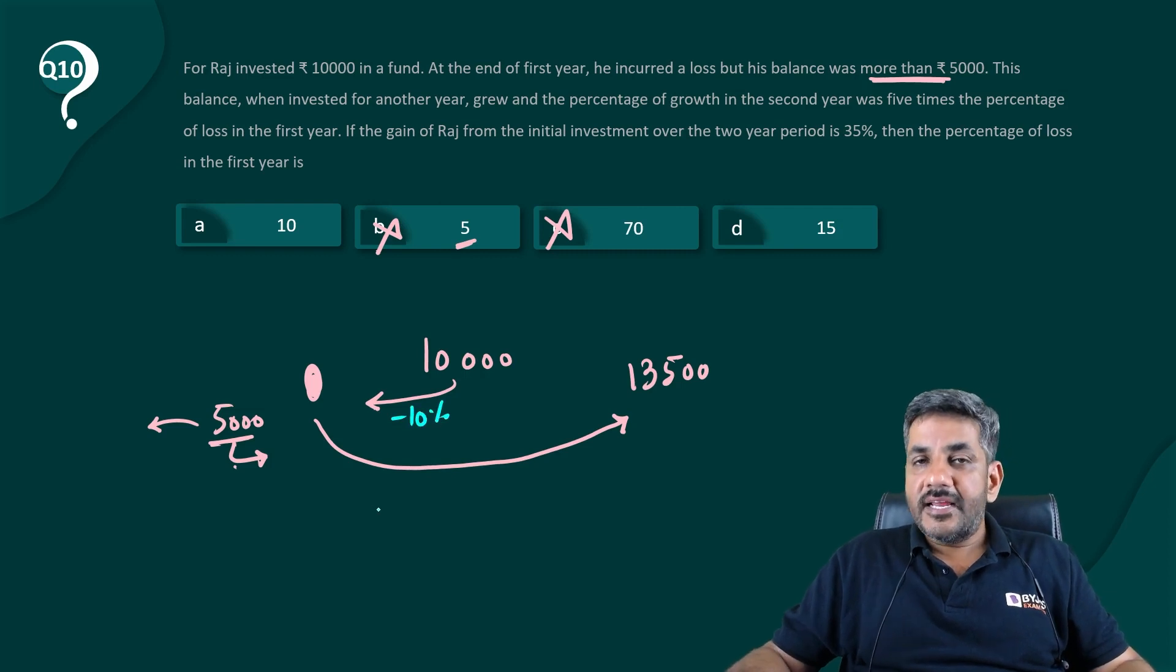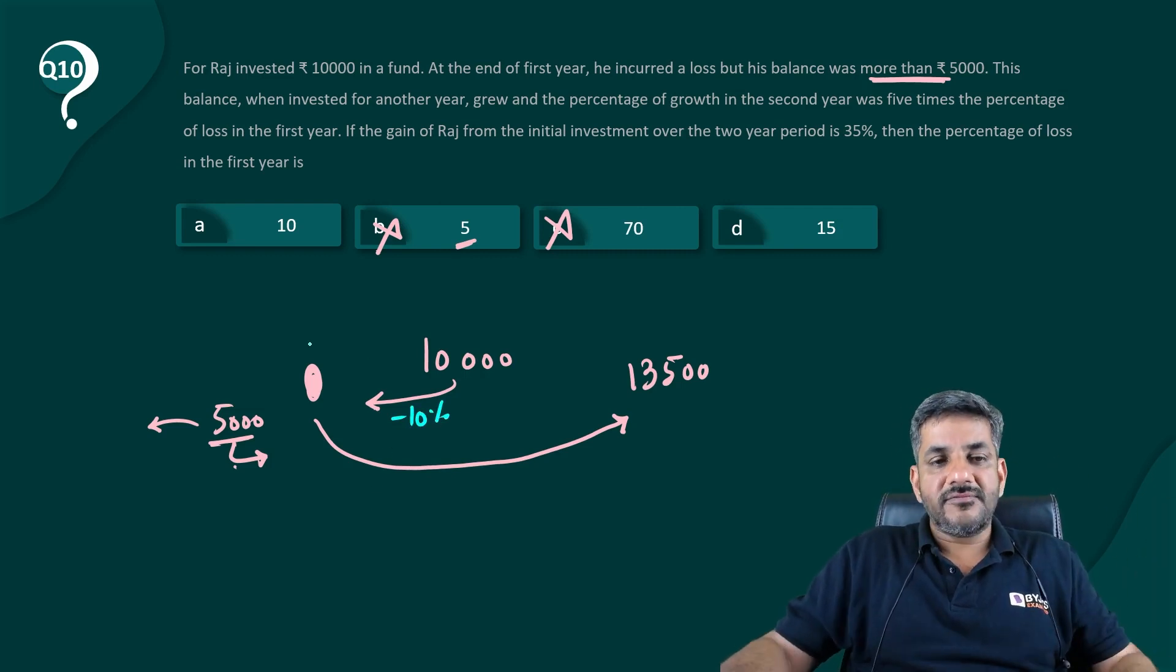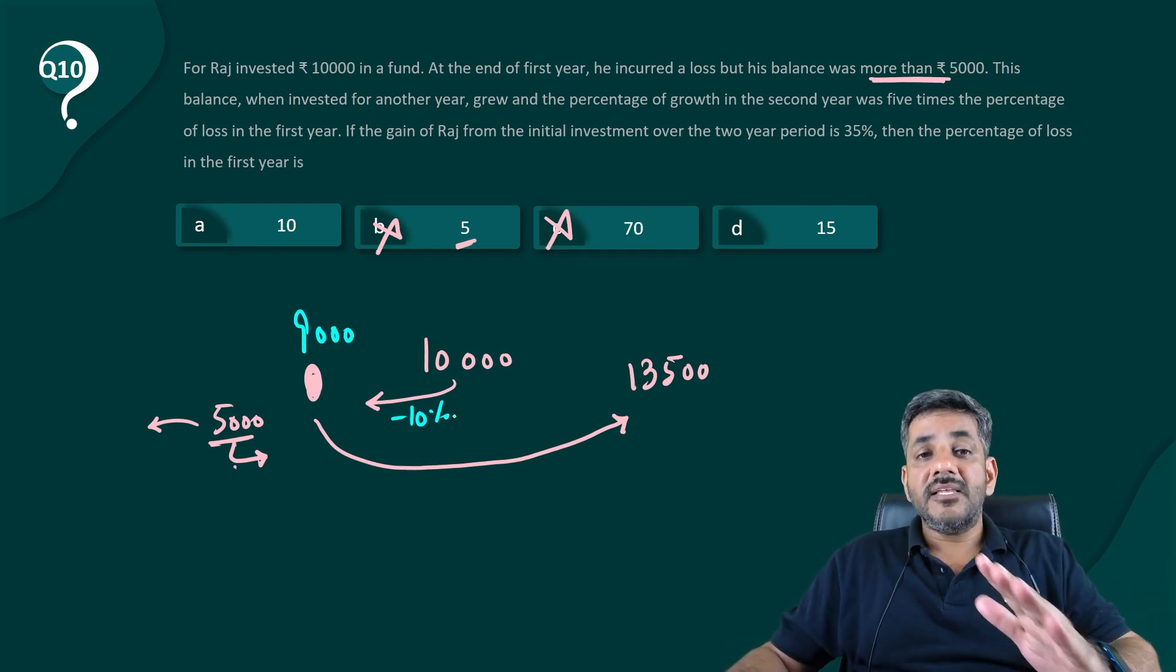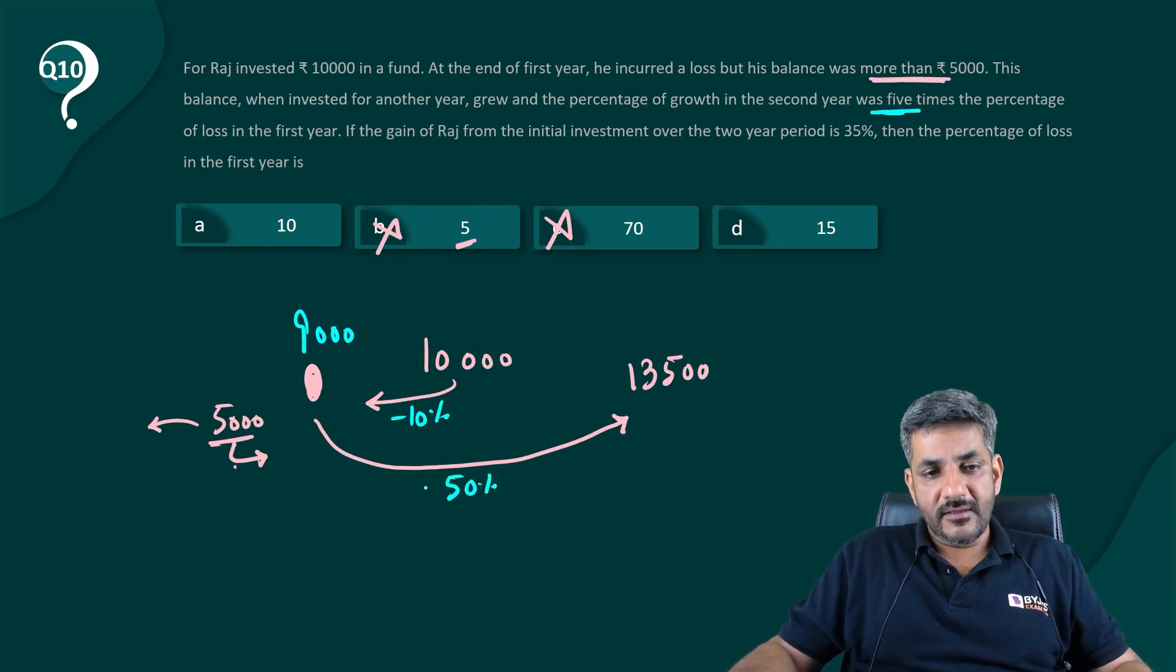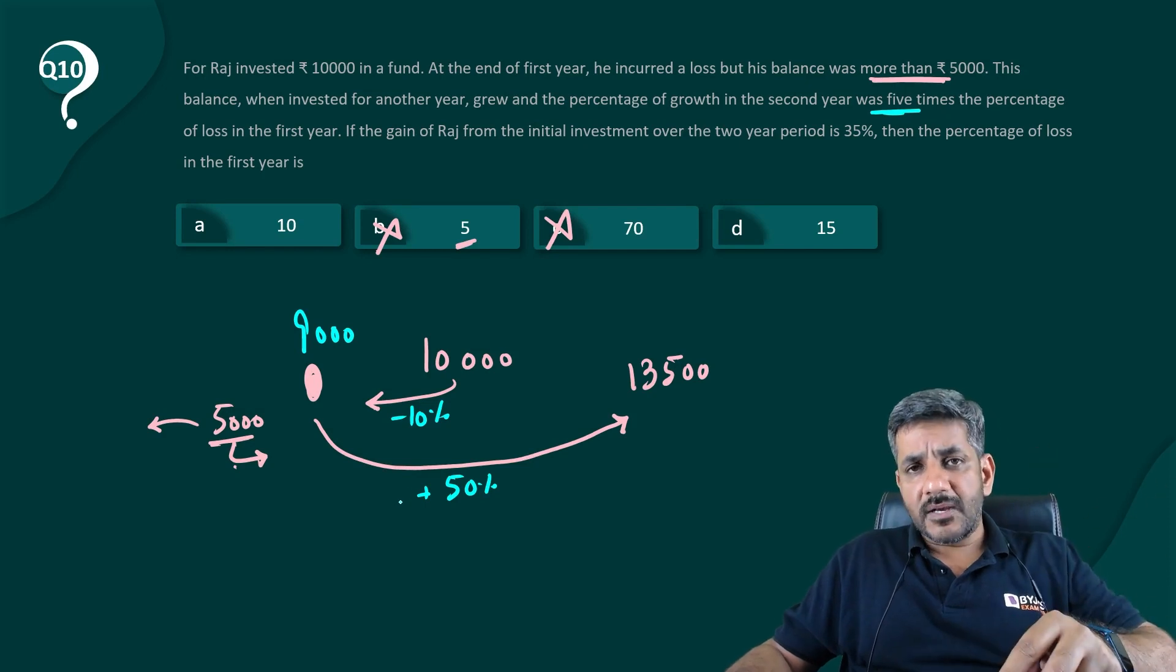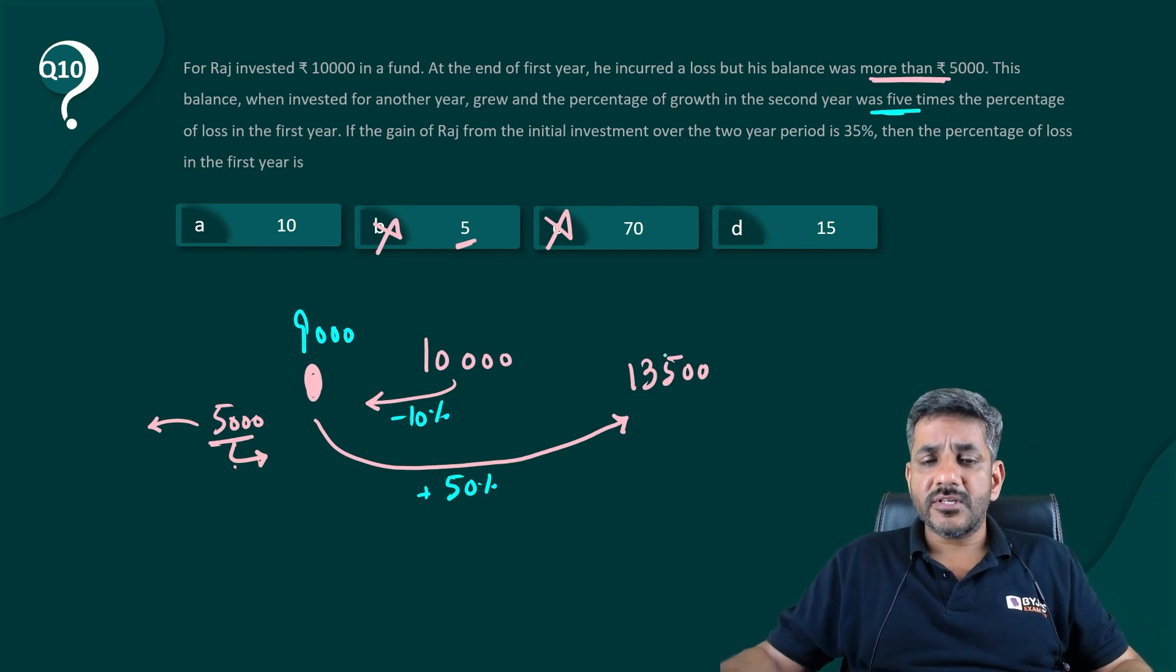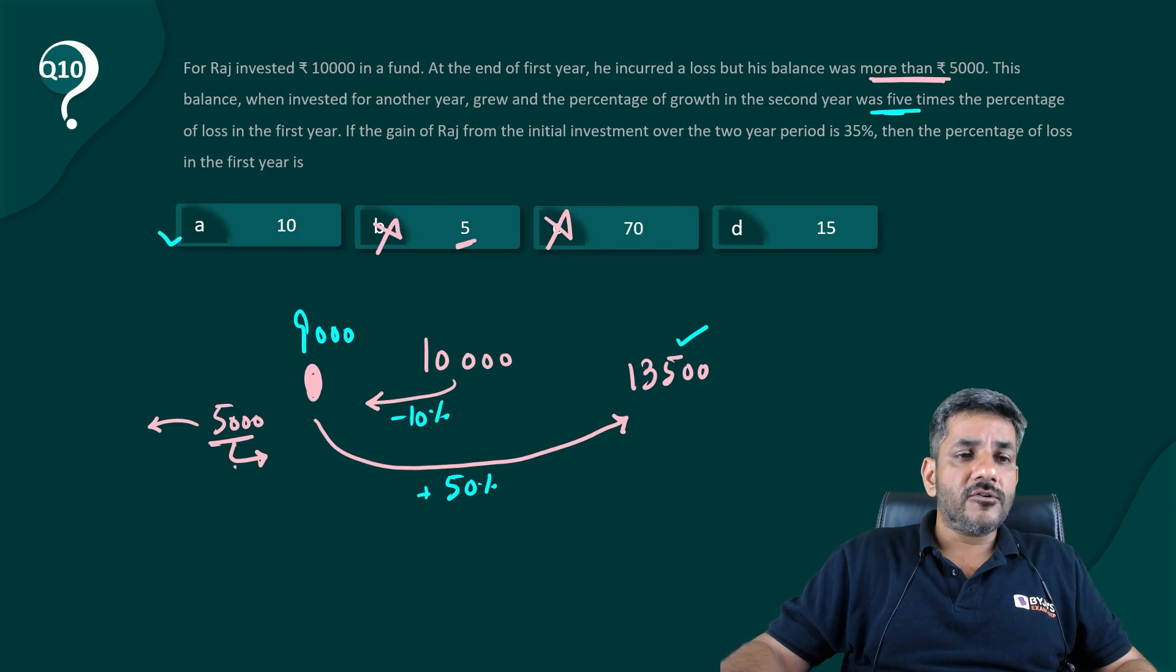If the percentage is 10, the first decrease takes it to 10% less, which means it takes it to 9,000, which is definitely above 5,000. Second time there must be an increase which is five times of that, that means an increase should be of 50%. So 9,000 increased by 50%, does it become 13,500? Yes. So therefore option A is the right answer for us.